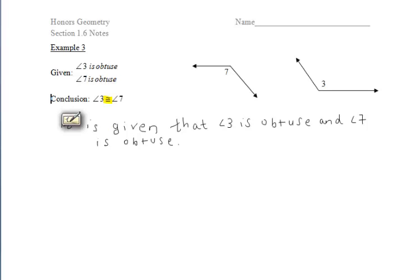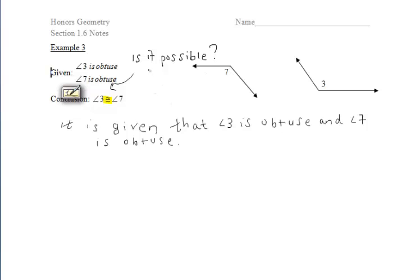Now, my question for you is: is that possible? Can angle 3 be congruent to angle 7? Well, if the two angles are obtuse, yeah, that's possible. But is it true all of the time? When we want to prove or conclude something with these proofs, we want to prove that it's true every single time. Is this one true all of the time? Nope.